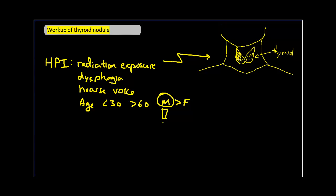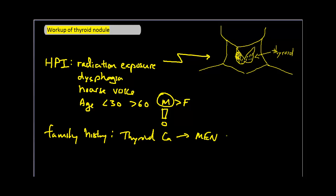Next is the family history. Interestingly, most thyroid cancers do not run in families, except for medullary thyroid cancer, which you might see in the MEN 1 and 2 syndromes. Someone with a family history of thyroid disease would most likely show a history of toxic multinodular goiter. In our case, the patient denies previous infection, no hoarse voice, no dysphagia, and no family history of thyroid problems.